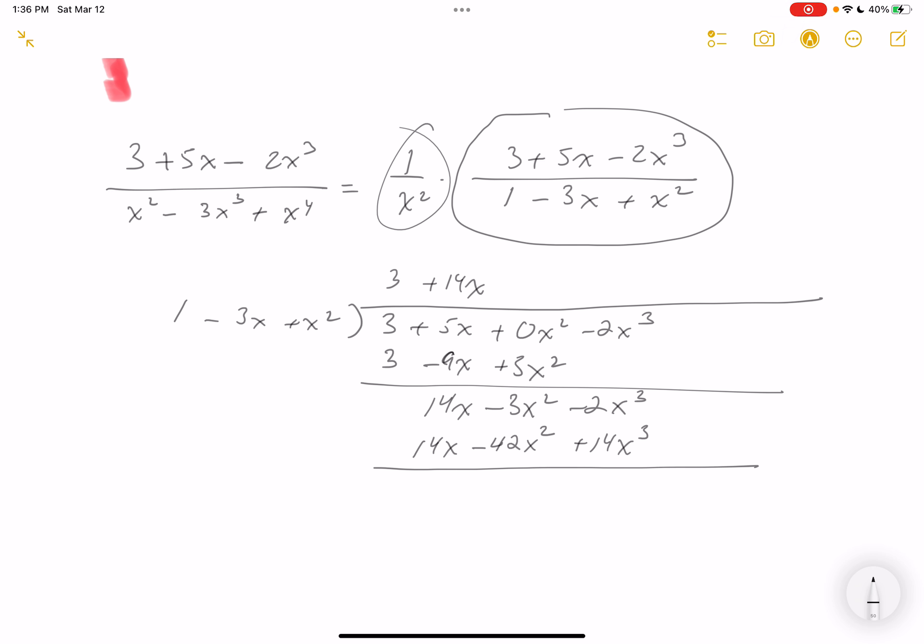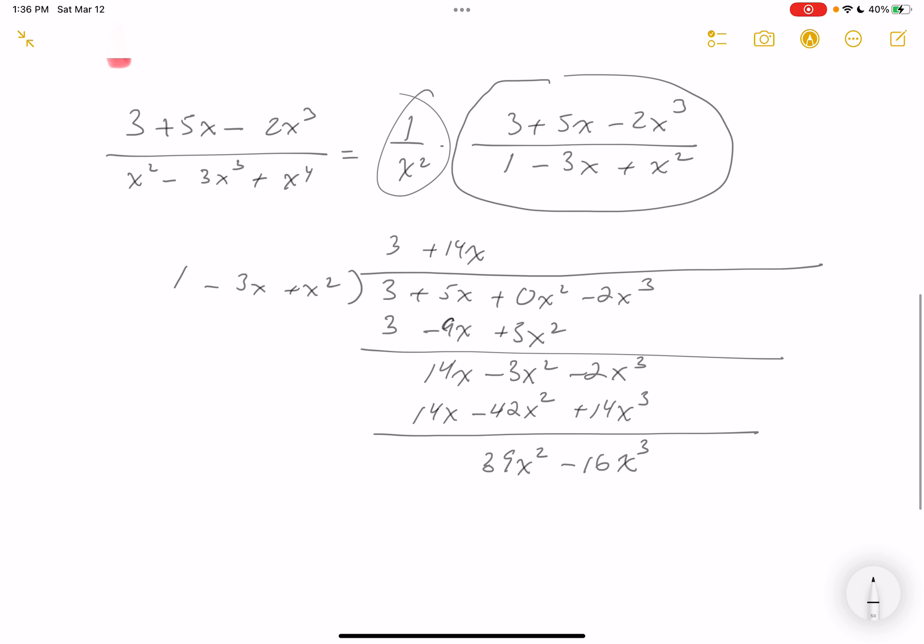Let's keep going. What do you get now when you subtract? You're going to get 39x squared minus 16x cubed. Let's keep going. Now we've got to get five terms, right? So 39x squared...